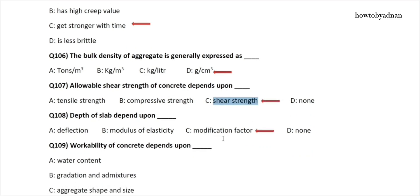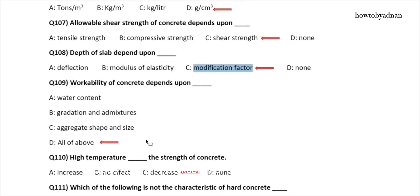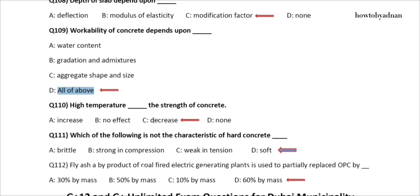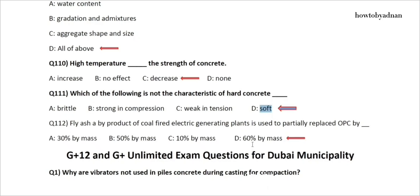Question 108: Depth of slab depends upon? The answer is option C: Modification factor. Question 109: Workability of concrete depends upon? The answer is option D: All of the above. Question 110: High temperature does what to the strength of concrete? The answer is option C: Decreases. Question 111: Which of the following is not a characteristic of hard concrete? The answer is option D: Soft. Question 112: Fly ash, a by-product of coal-fired electric generating plants, is used to partially replace OPC by? The answer is option D: Up to 60% by mass.